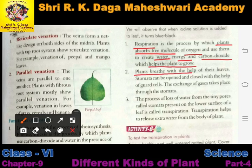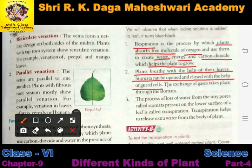Now, plants breathe with the help of their leaves. Stomata can be opened and closed with the help of guard cells. We know that plants respire through their leaves. Plants can respire with the help of stomata only, and the process of respiration in plants takes place through stomata.